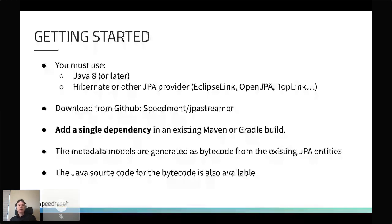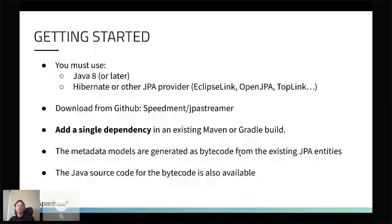What's required to use JPA Streamer? Obviously Java 8, since streams were introduced then — but any version 8 or higher works. You also need a JPA provider like Hibernate, the most common one, though EclipseLink works too. JPA Streamer was never meant to replace a JPA provider — it just adds things on top. You can download from GitHub or add a single Maven or Gradle dependency. The metadata models are generated as bytecode from the existing JPA entities. There's nothing secret — it's pure Java.